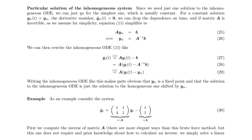The first step is to find a particular solution of the inhomogeneous system. Since we just need one single solution, you can be opportunistic and try to find the simplest one. The simplest one, if it exists, is a constant solution.